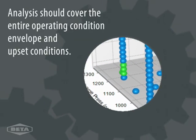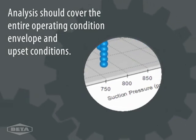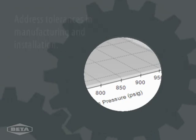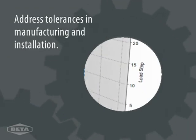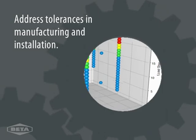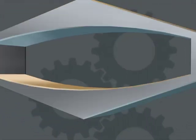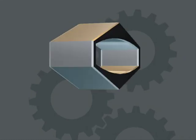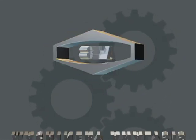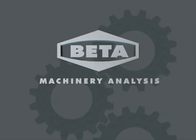The analysis should adequately cover the entire operating condition envelope, including upset conditions, while addressing tolerances in manufacturing and installation operation. For superior accuracy and practical recommendations, please contact Beta for your next compressor or pump project.